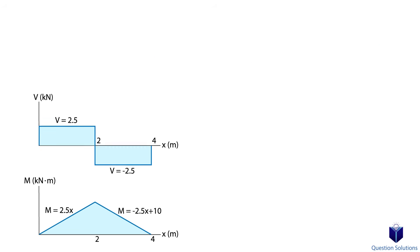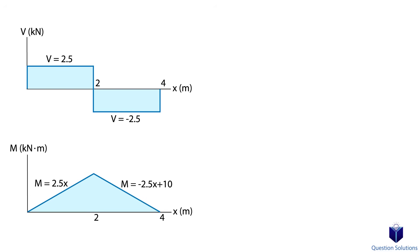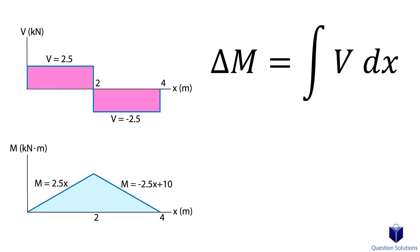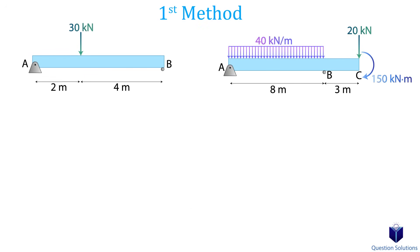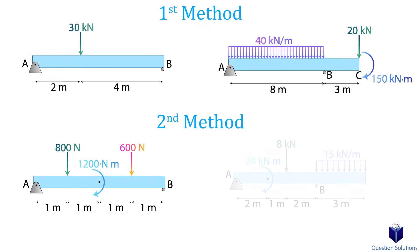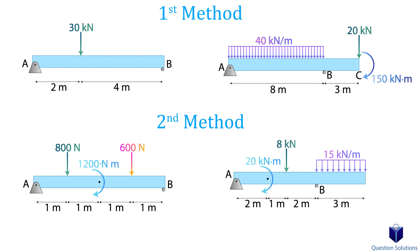The second method involves knowing the relationship between a shear force diagram and a moment diagram. Here are the things you should keep in mind: if the shear force is positive, the slope of our moment diagram is positive. If the shear force is negative, the slope of our moment diagram is negative. The area under the shear force diagram gives us the moment equations, and if we take the derivative of our moment diagram, we get the shear force equations. I will go over both methods with four examples and show more relationships between them. By the end, you should have a very good idea of how to draw these diagrams.